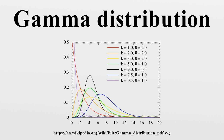If X has a Maxwell-Boltzmann distribution with parameter a, then X ~ Gamma. If X ~ Gamma, then X follows a generalized gamma distribution with parameters p = 2, d = 2k. If X ~ Gamma(α, β) and Y ~ Gamma(α', β) are independently distributed, then X/(X+Y) has a beta distribution with parameters α and β. If X_1, …, X_n ~ Gamma are independently distributed, then the vector (X_1/X, …, X_n/X), where X = X_1 + … + X_n, follows a Dirichlet distribution with parameters α_1, …, α_n. For large k, the gamma distribution converges to a Gaussian distribution with mean μ = kθ and variance σ² = kθ².